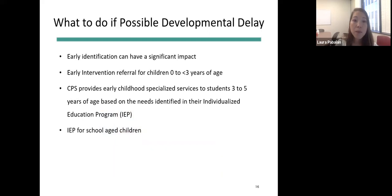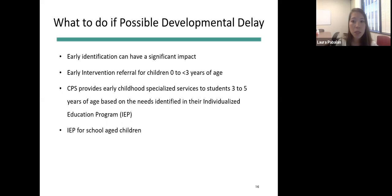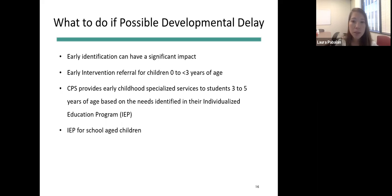The good news is that if a child is found to have developmental delay, there is help and many resources available, and the earlier we catch the delay, the better the outcomes. For children zero to their third birthday, early intervention is available in Illinois to provide therapies based on the child's area of delay. A parent can self-refer — a shelter can help a parent refer to early intervention. After age three, CPS usually provides specific therapies through an individualized education program, or IEP.